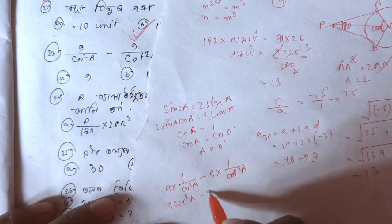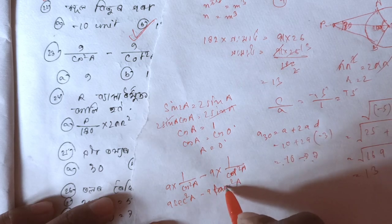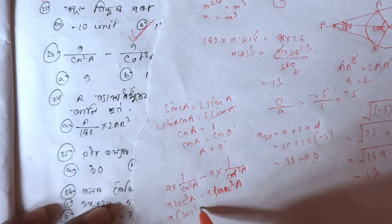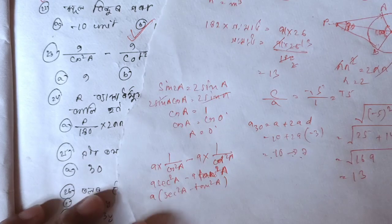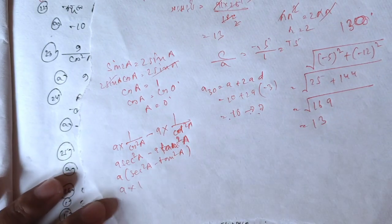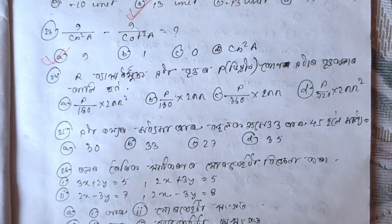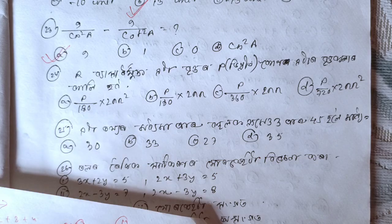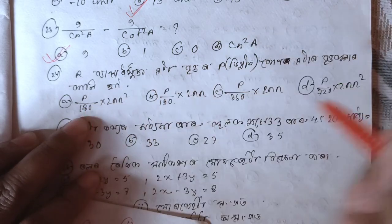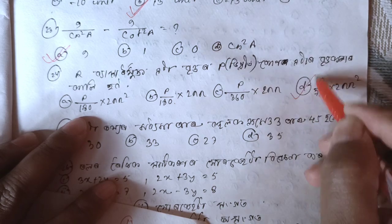9 into 1 by cos squared a. 1 by cos squared a, 9 to block a cos squared a. The matter of 2 by cos squared a — this one can be cancelled by 360, option D is correct.